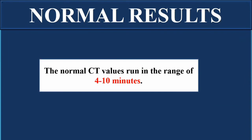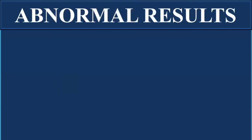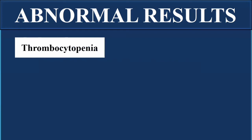The normal clotting time for a person is 4 to 10 minutes. For the Lee and White method, the range can extend up to 15 minutes. If the blood takes much longer to clot, it is an indication of certain pathologies. Abnormal clotting time can indicate diseases such as thrombocytopenia, in which there is a decreased platelet count, resulting in the blood being unable to clot properly.